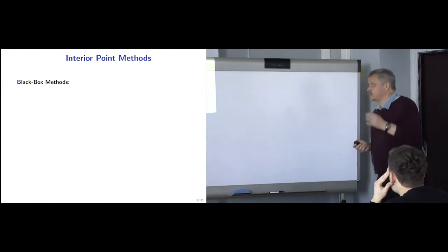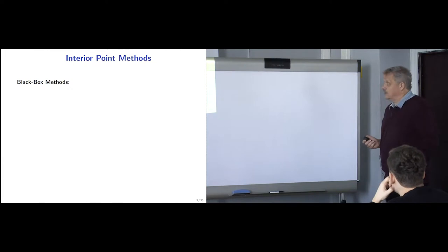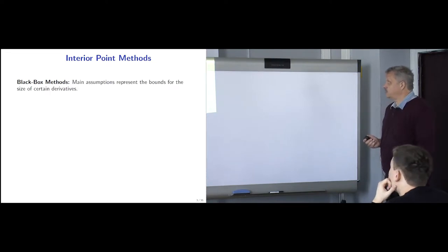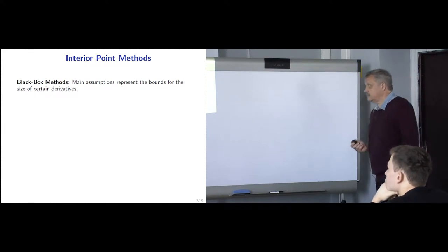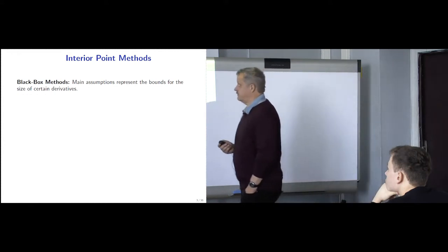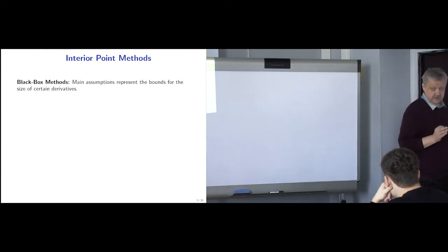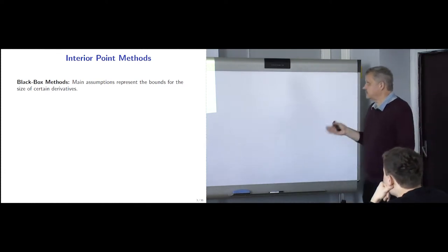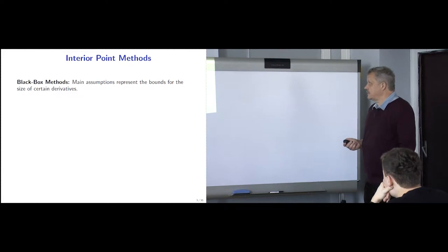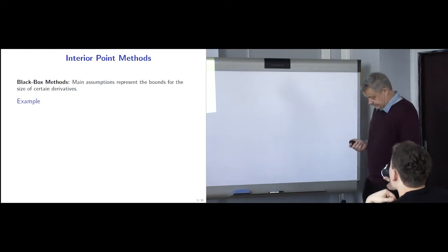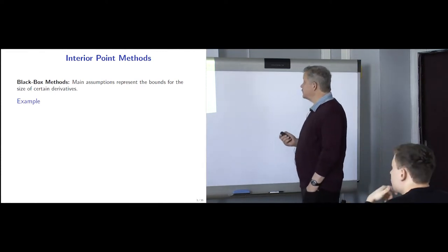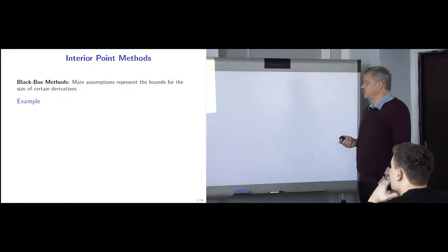Still, at that moment we started to understand that the black box model may not be so perfect. All assumptions in this field are made about the size of certain derivatives — Lipschitz continuous functions, functions with Lipschitz continuous gradient, Lipschitz continuous Hessian, and so on. But if we look at some examples of functions, we can see that maybe these assumptions are not so good.